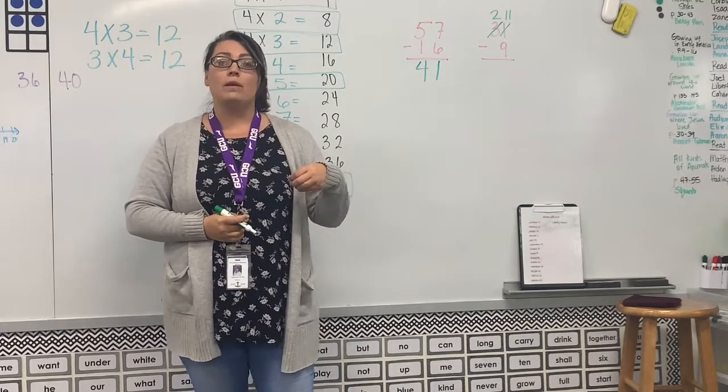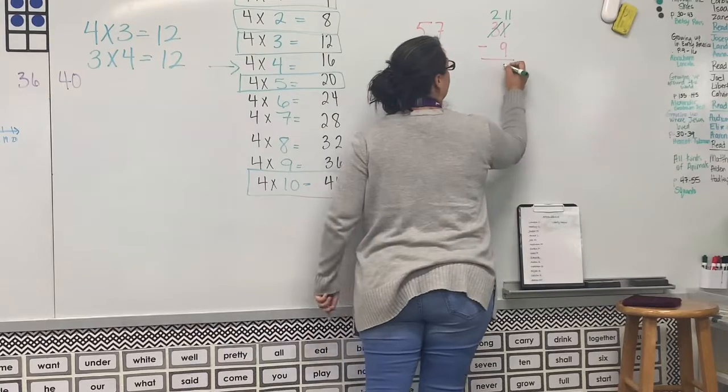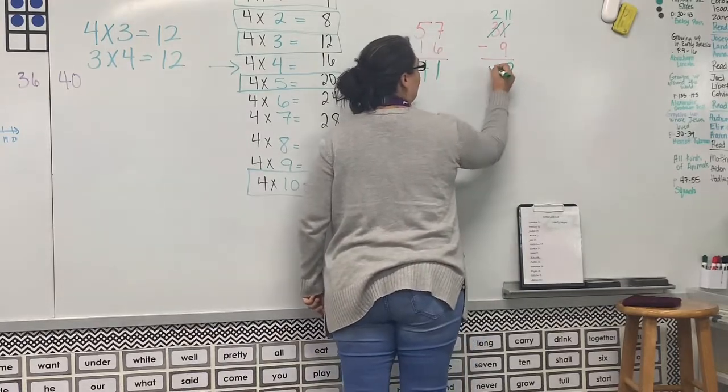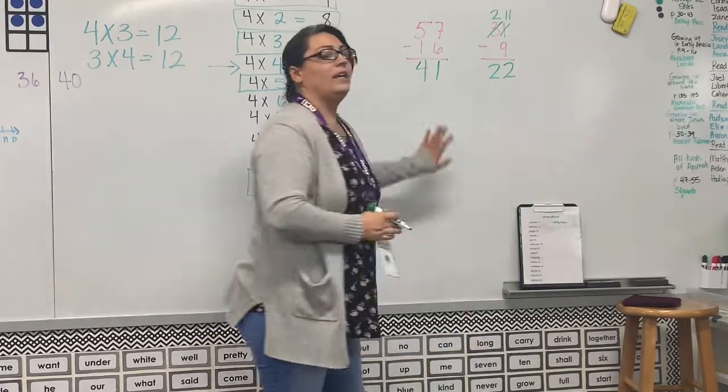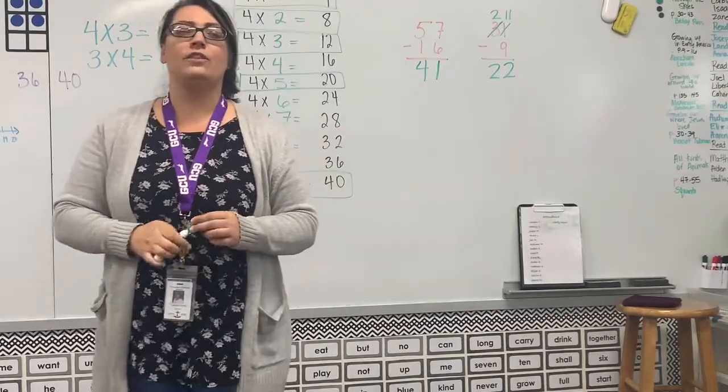Remember, if you can't remember, you can always count up from nine: nine, ten, eleven. So that's two. Two minus zero is two. Again, this is review, but it will be at the bottom of your page and I wanted to make sure that you had an example.